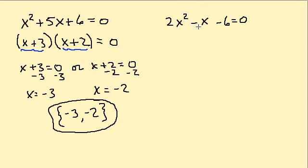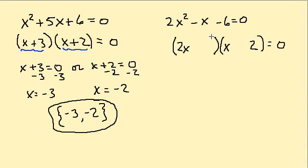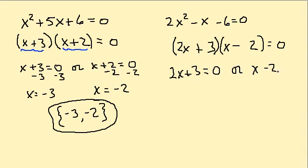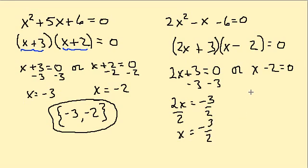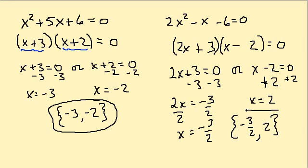Now let's look at this one. We have 2x squared minus x minus 6. Factoring it gives 2x plus 3 times x minus 2. Setting each factor equal to 0: 2x plus 3 equals 0 gives 2x equals negative 3, so x equals negative 3 halves. And x minus 2 equals 0 gives x equals 2.